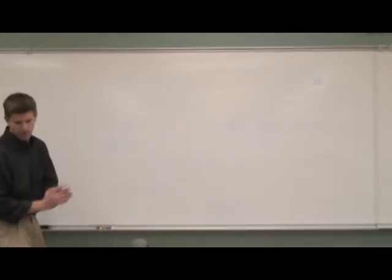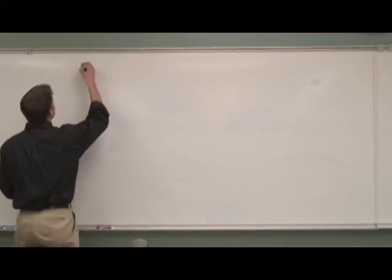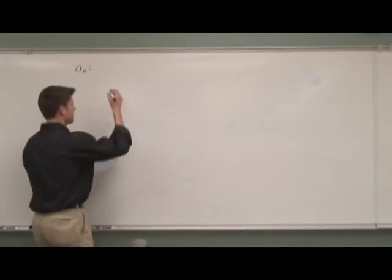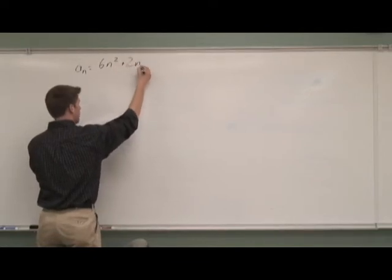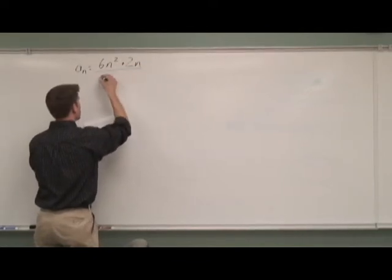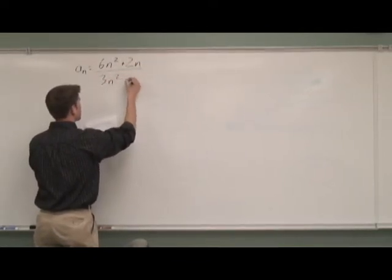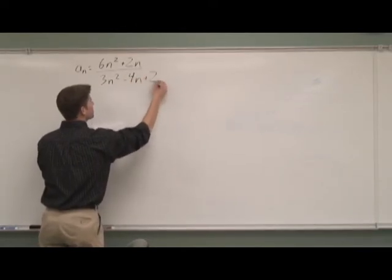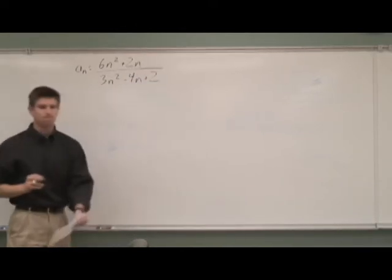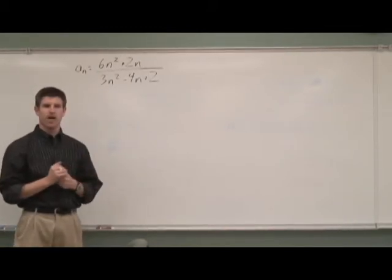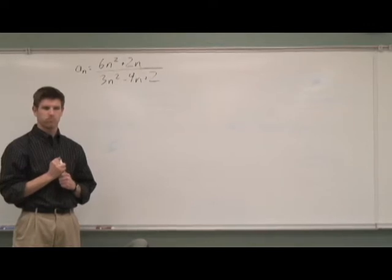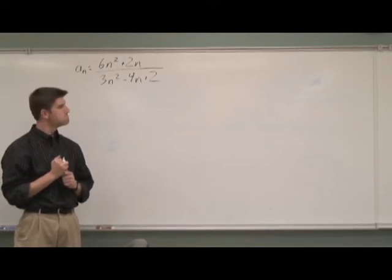So, let's suppose you have a sequence 6n² + 2n over 3n² - 4n + 2. And I wanted to know, what happens to this sequence over time?